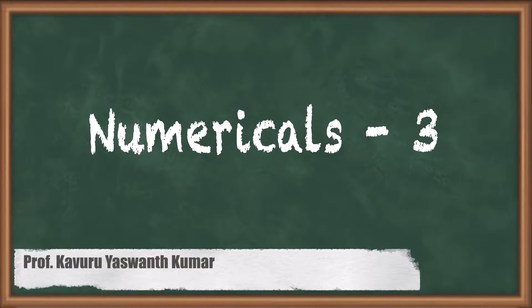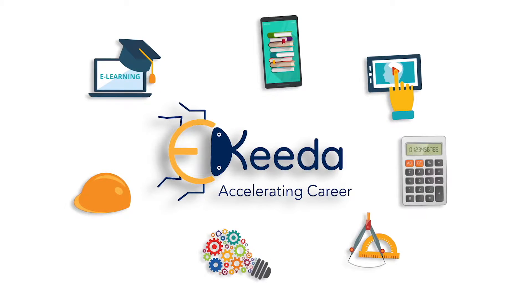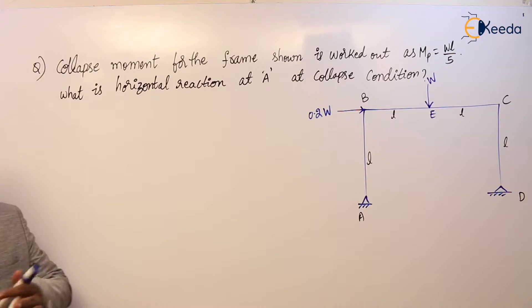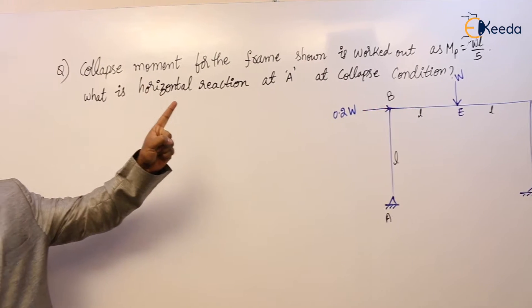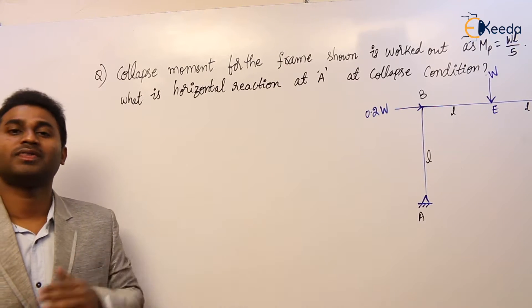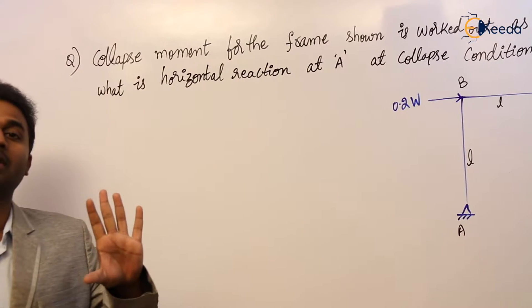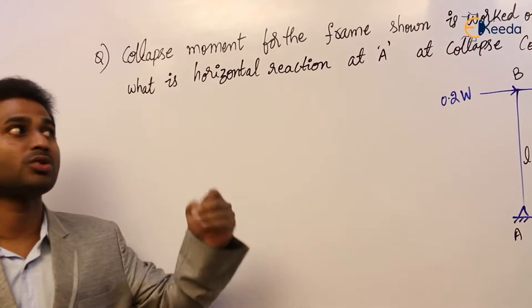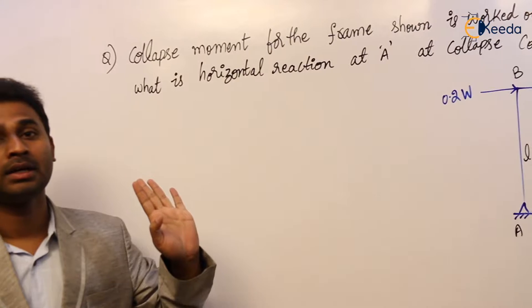In this video we will discuss the third question in plastic analysis of frames. The question asks for the collapse moment for the frame shown in the figure, worked out as MP = WL/5. So the collapse load is given directly. In the problems we have solved so far in plastic analysis for beams or frames, our main aim was to calculate the collapse load, but here the collapse load is given.